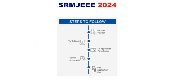After registering, you will receive an application number and then fill the form. You will need to upload your signature, photograph, and 10th class mark list, then pay the application fee. Once submitted, your SRM JEEE 2024 application will be complete.